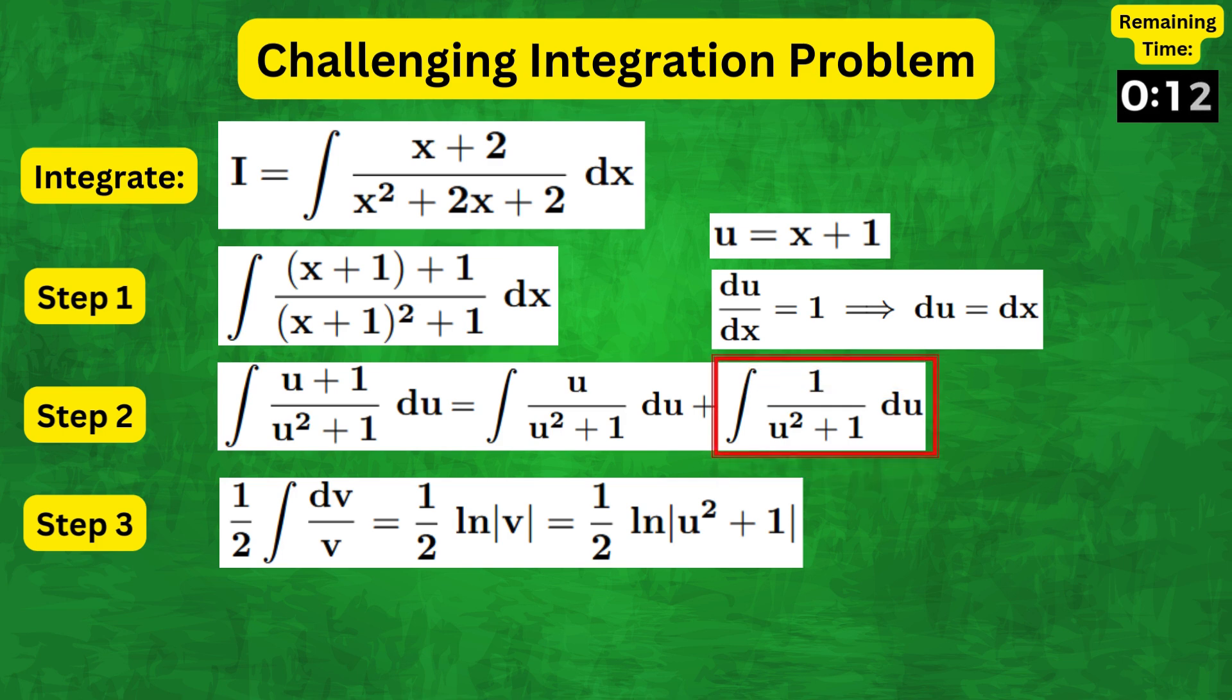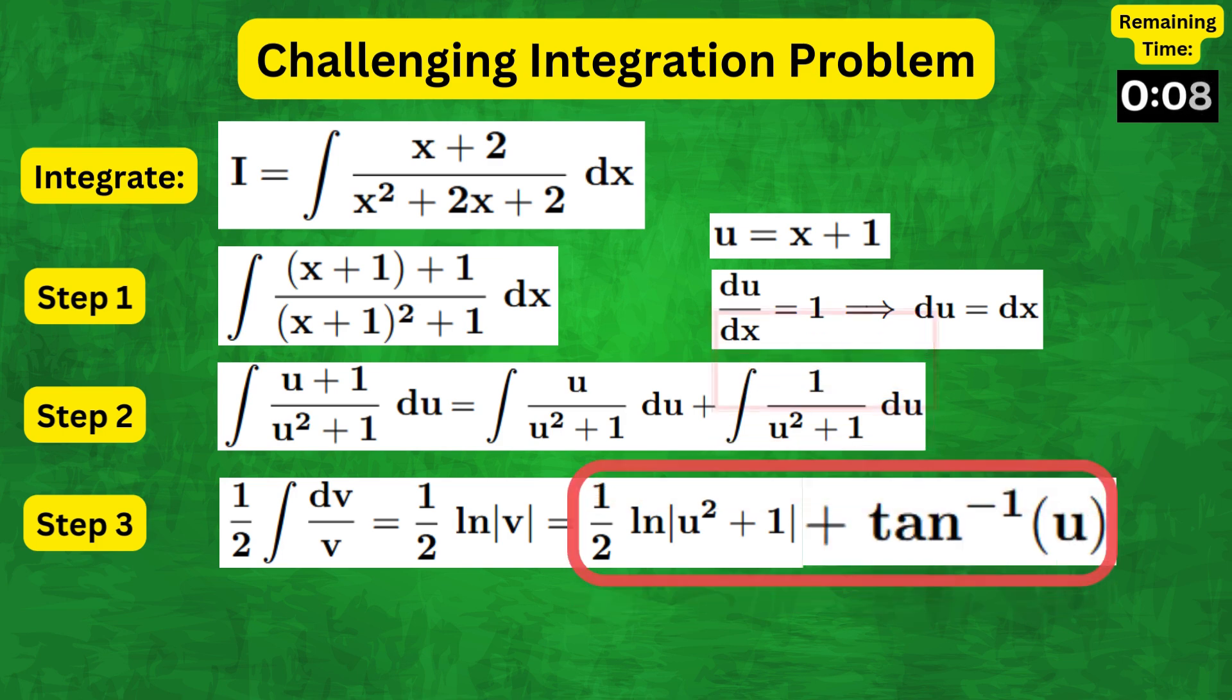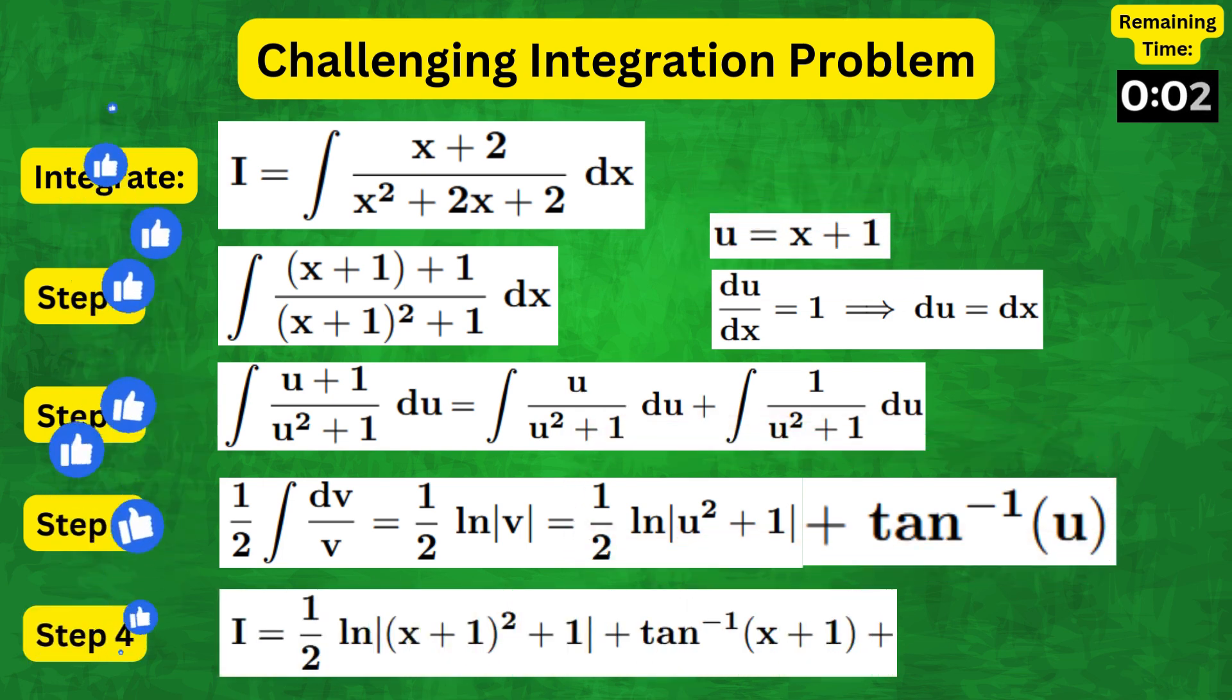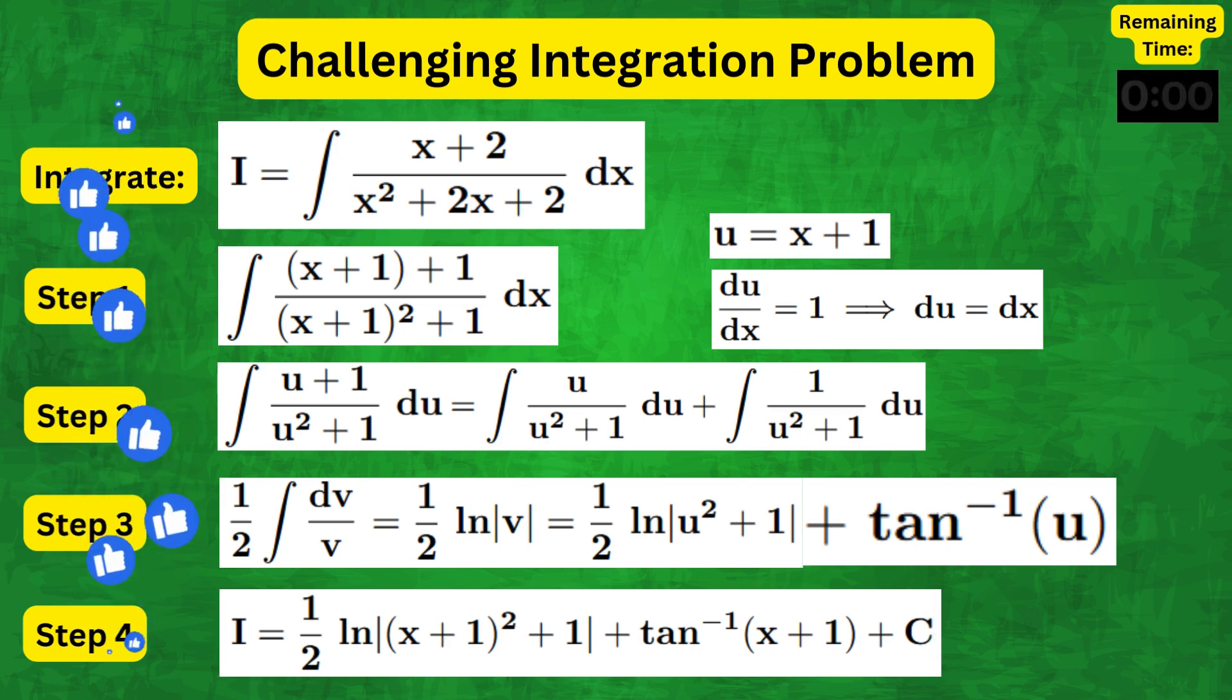And for the second integral we recognize that it is simply the tan inverse of u. Finally, replacing u with x plus one we get the answer: a half natural log of modulus of x plus one squared plus one plus tan inverse of x plus one plus c.